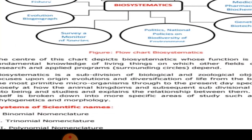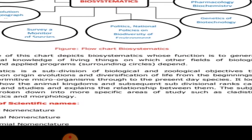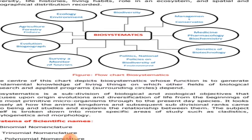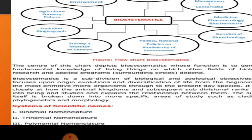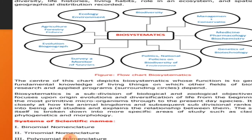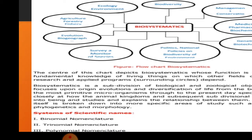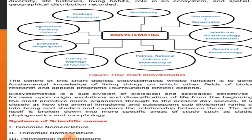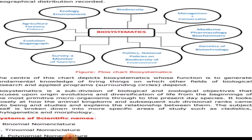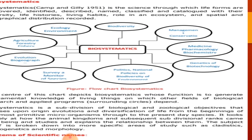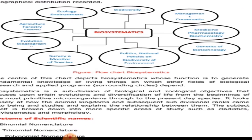Biosystematics is a biological discipline which is dependent on the origin of evolution — which is the beginning of the organism, going back to the most primitive organism — and how present-day organisms developed. It looks closely at how the animal kingdom and sub-divisional ranks came into being and explains the relationships between them. Other fields are also dependent on biosystematics.